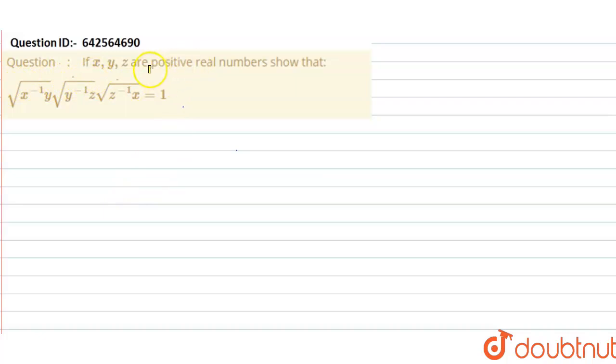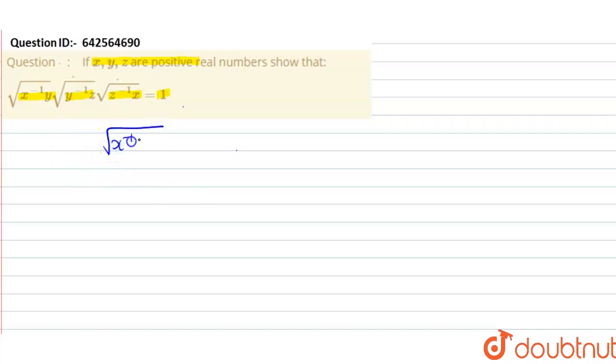Let us start with the question. What is given: if x, y, z are positive real numbers such that the product of √(x⁻¹·y), √(y⁻¹·z), and √(z⁻¹·x) equals 1. So root of x raised to minus 1 into y, into root of y raised to minus 1 into z, into root of z raised to minus 1 into x, this equals 1.